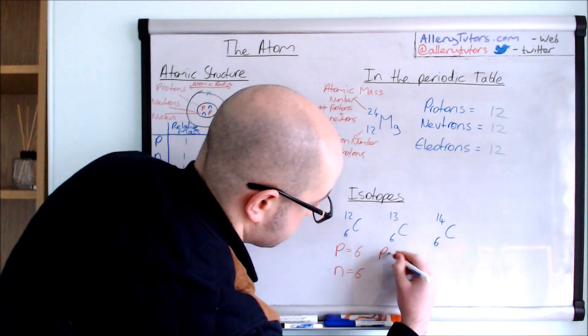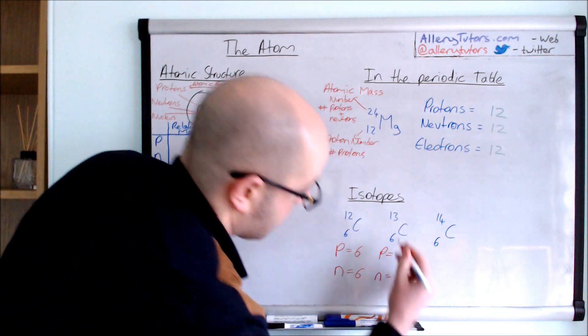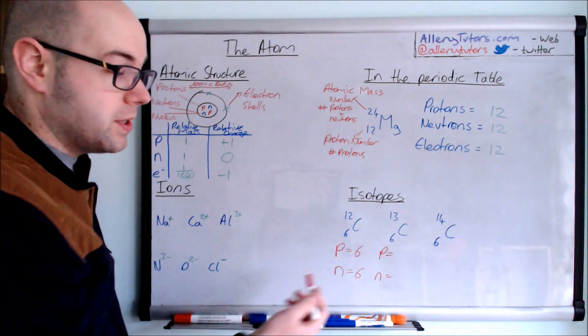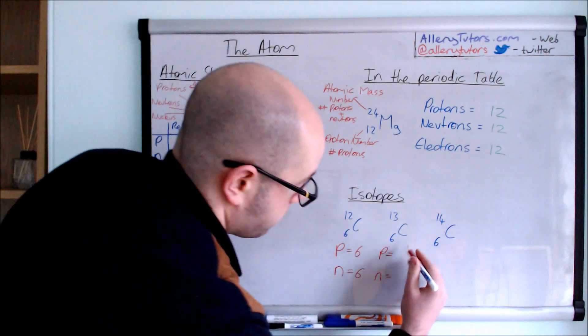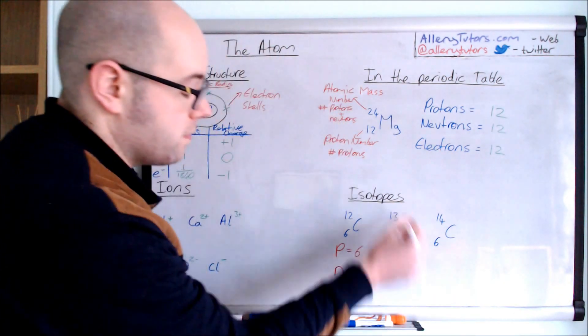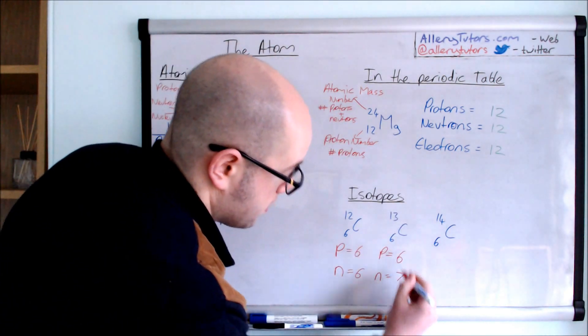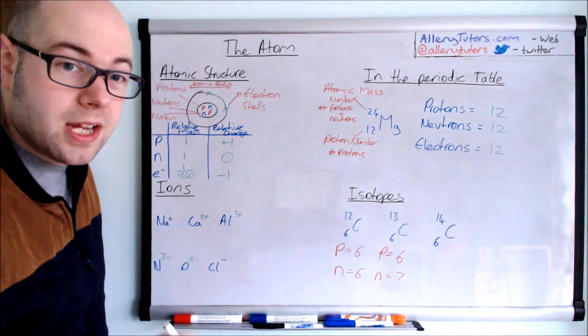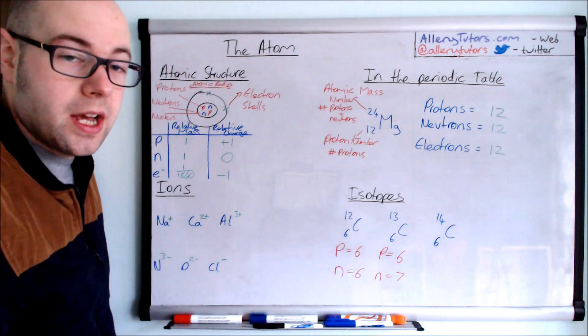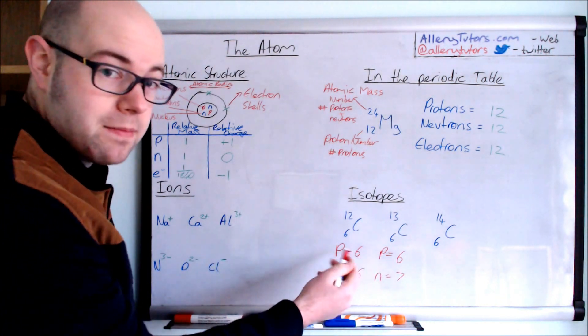So we've gone to the next one. So this is carbon 13. We have six protons. And the number of neutrons this time is seven. Thirteen minus six gives us seven. So you can see we've got one extra neutron there. But crucially, same number of protons.